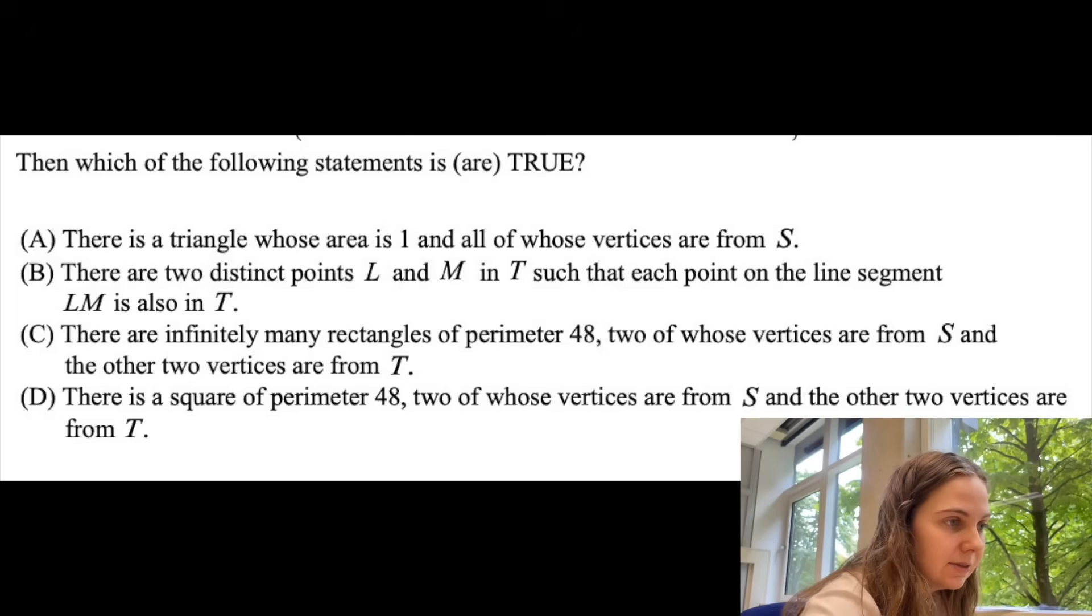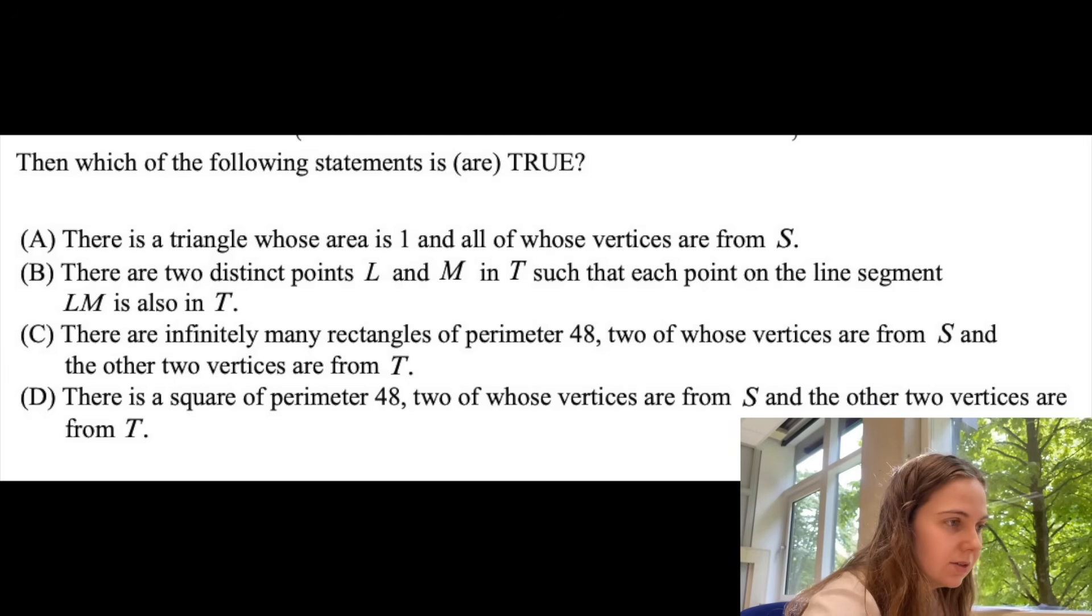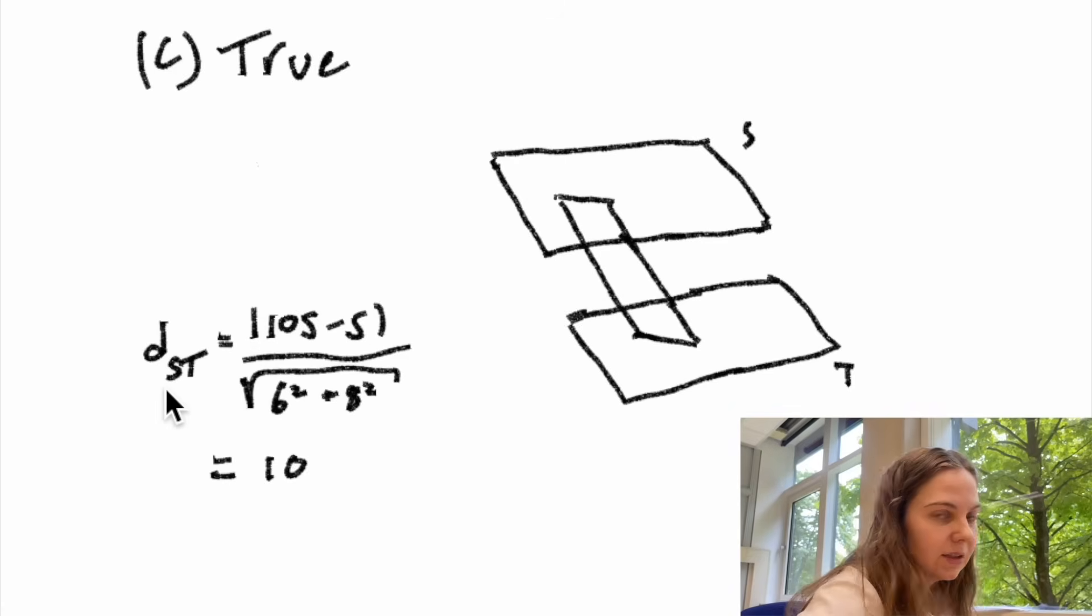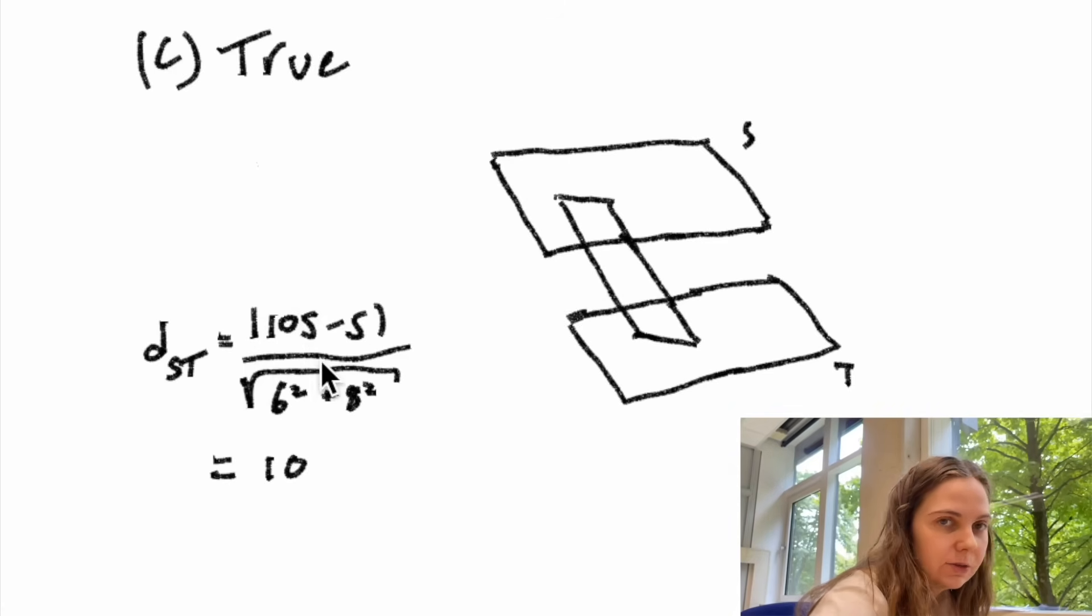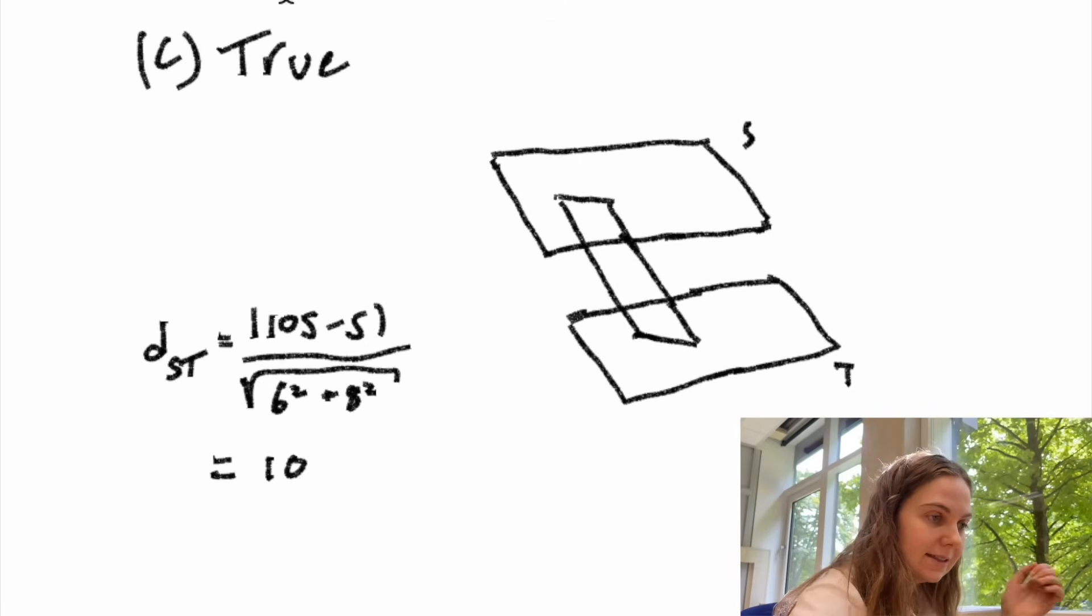And then for statement C: there are infinitely many rectangles of perimeter 48, two whose vertices are from S and the other two vertices are from T. So as I said previously S and T are two parallel planes with the same normal vector so it's quite easy to work out the distance between them because you just take the absolute difference between these two constant terms 105 minus 5 over the length of this normal vector which is just the square root of 6 to the power of 2 plus 8 to the power of 2. So we know that the distance between these two planes is 10 which means that we can quite easily think of a lot of different rectangles between these planes, two vertices are from S and the other two vertices are from T which will have a perimeter of 48. So we know that C is true.